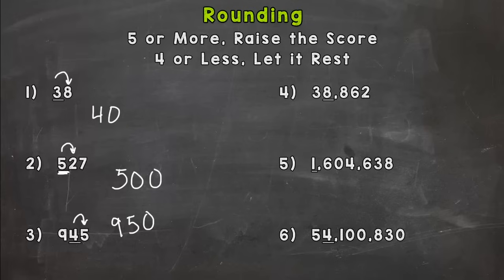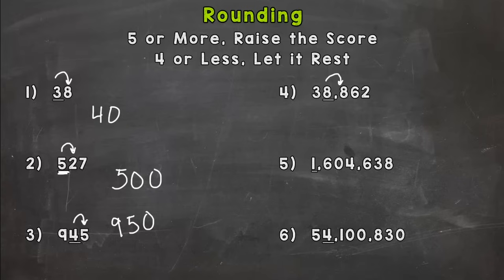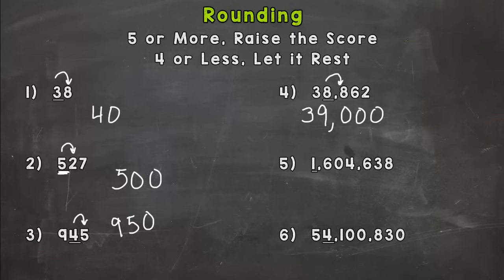Let's take a look at number four: 38,862. What place is the underlined eight? Hopefully you're thinking the thousands place. We are seeing if this number is closer to 38,000 or if it rounds up to 39,000. Let's take a look next door — that eight is five or more, so it tells the other eight to round up. We keep everything to the left the same, this eight rounds up to a nine, and everything to the right of the underlined digit changes to zeros. That number rounds to 39,000.